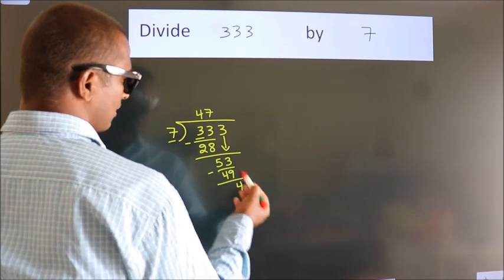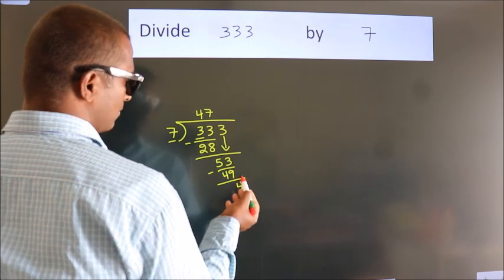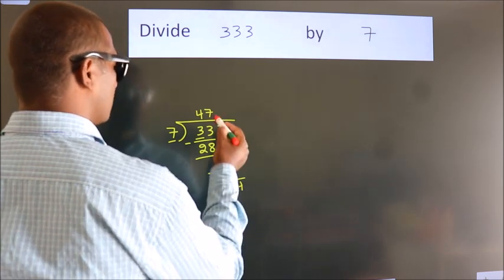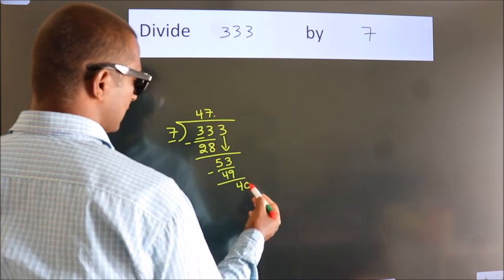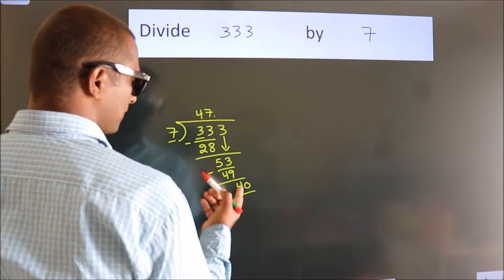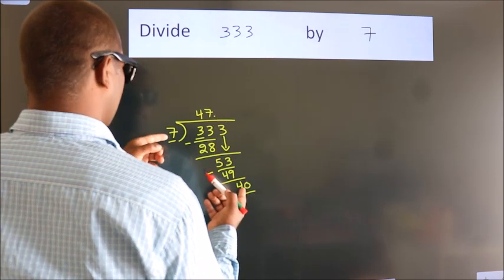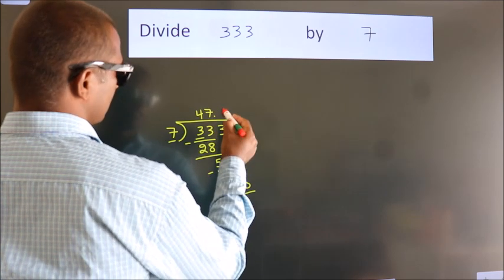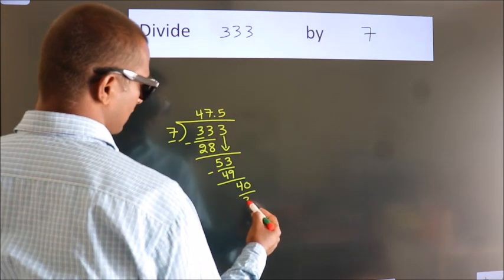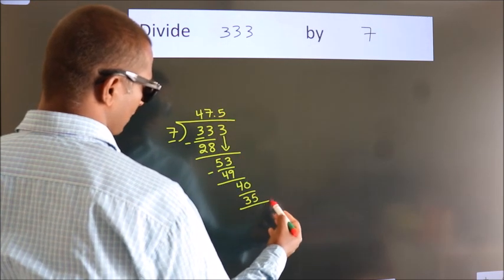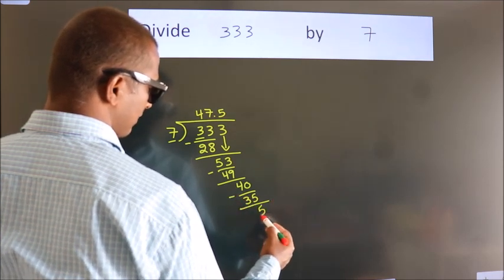After this, no more numbers to bring down. So what we do is we put dot, take 0, so 40. A number close to 40 in 7 table is 7 fives, 35. Now we subtract. We get 5.